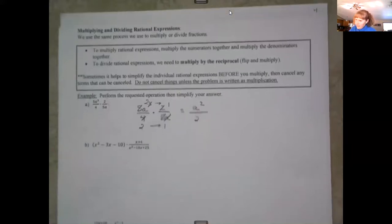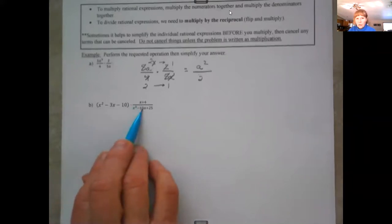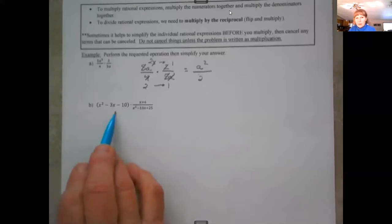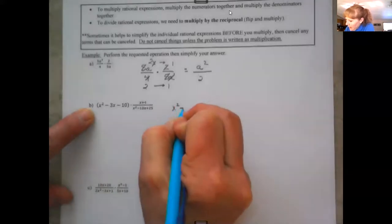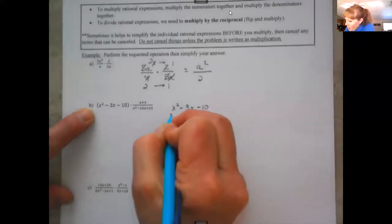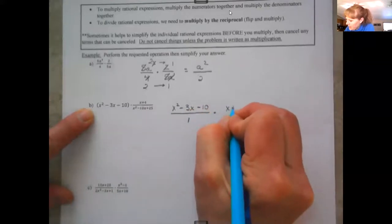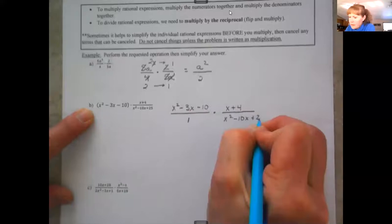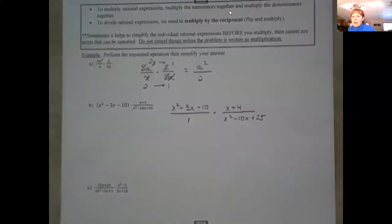Consider this kind of like a whole number times a fraction. When you're doing that, put your whole number over 1. So we'll have x² minus 3x minus 10 over 1, times x plus 4 over x plus 25. You have to factor before you can cancel — this goes back to chapter 6.